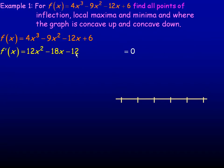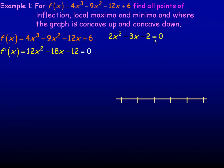We set that equal to 0 to find where the critical points are. Notice that everything here divides evenly by 6, so let's divide by 6, and that's the quadratic equation we have to solve. You can use the quadratic formula, but it does factor fairly easily as well. It factors into (x minus 2) and (2x plus 1). Check out one of my other lessons on solving quadratic equations by factoring if you want to see how to do that.